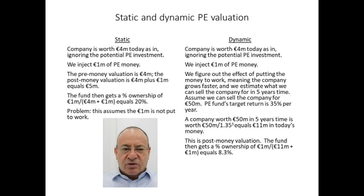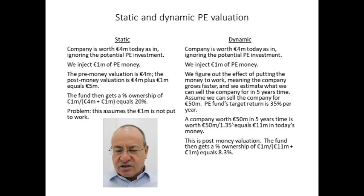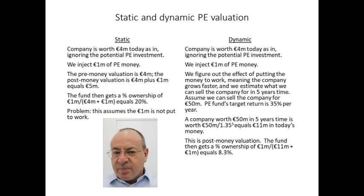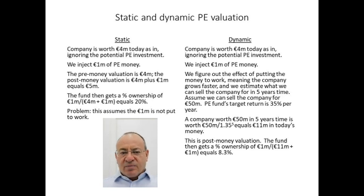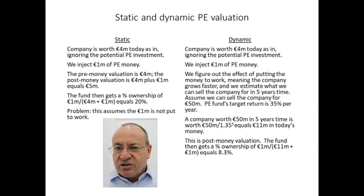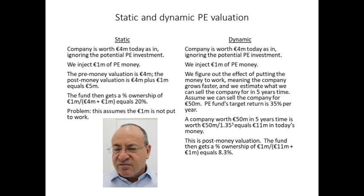Now let's work through the calculation, divided into the static and the dynamic. Under the static calculation: the company today is worth four million euros as it is, ignoring my investment. The owner or management would like a one-million investment to take the company to the next level. So the pre-money valuation is four million, the post-money valuation is four million plus one million — five million — giving me an ownership of twenty percent, which is arithmetically one million divided by five million. The limitation of this method is that it implicitly assumes my one million just sits in the bank and is not put to work. In that sense, the static valuation is incorrect.